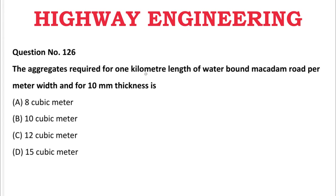Next question: The aggregate required for 1 km length of water-bound macadam road per meter width and for 10 mm thickness is — A: 8 cubic meters, B: 10 cubic meters, C: 12 cubic meters, D: 15 cubic meters. The correct answer is C, 12 cubic meters.